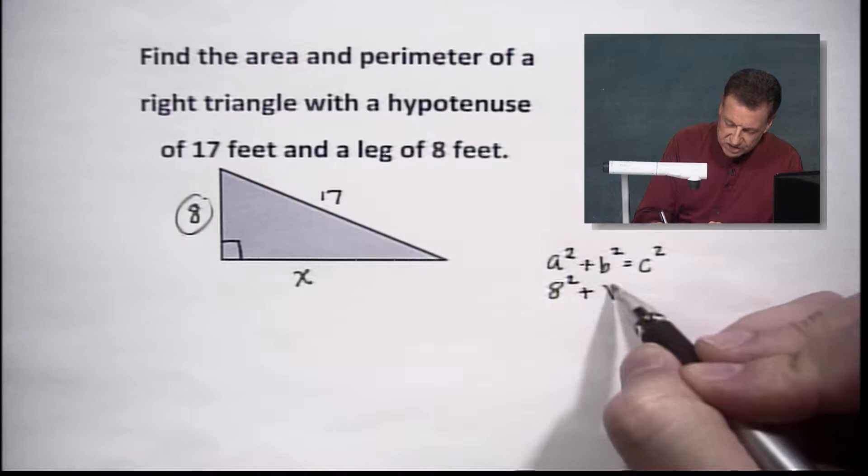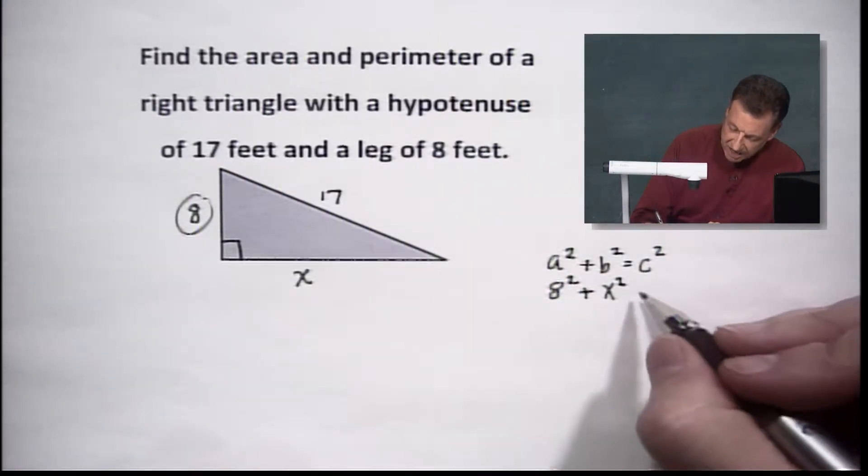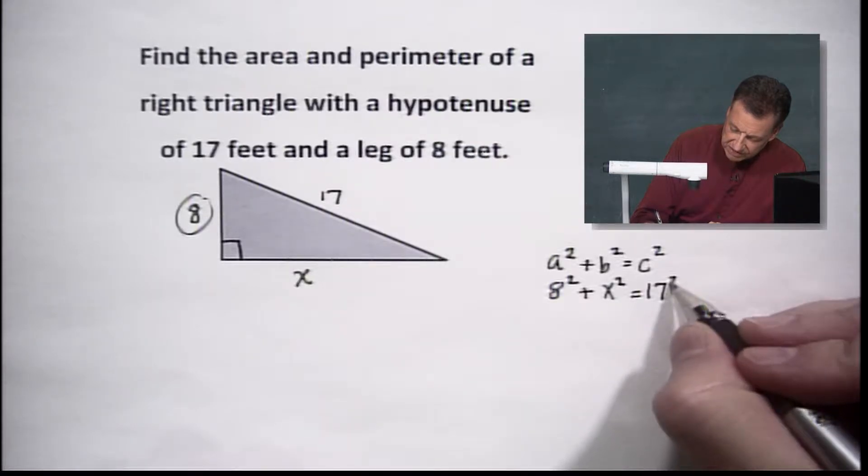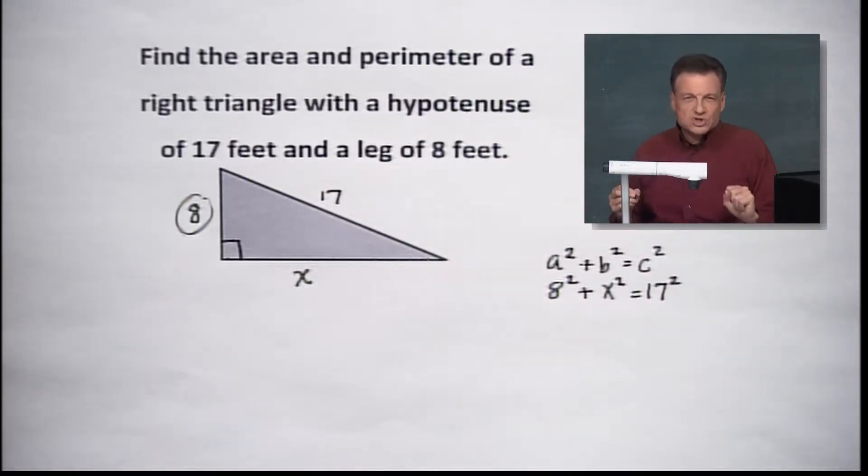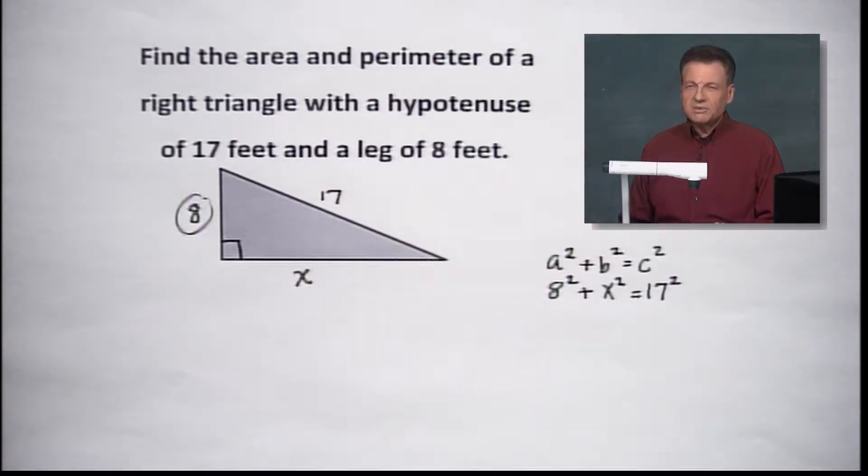We'll call that 8 squared. I'm going to go ahead and change the B to X, since I put an X on there, so I don't want to confuse people. And on the other side out here, we've got 17 squared. So the first thing is, let's figure out what X equals.